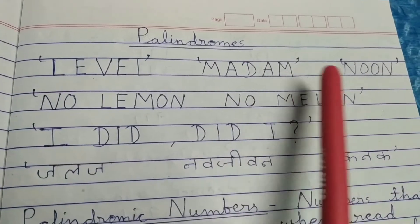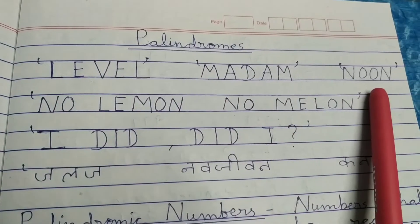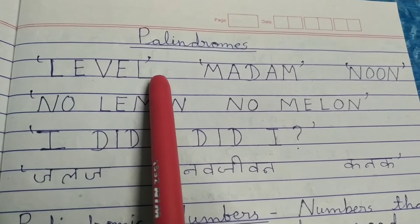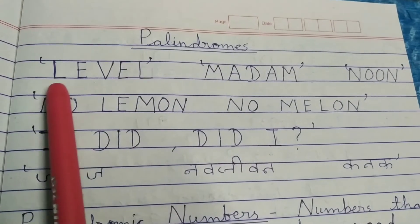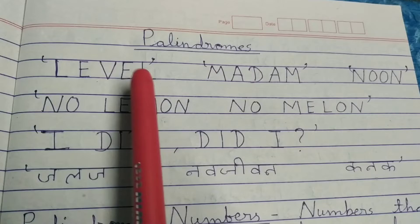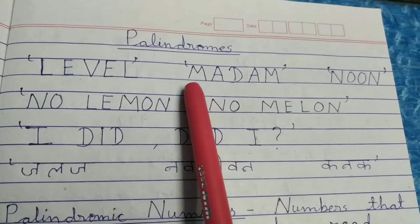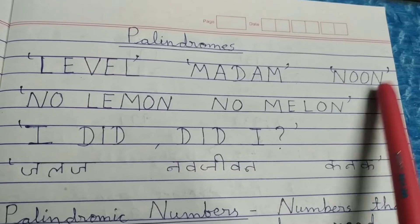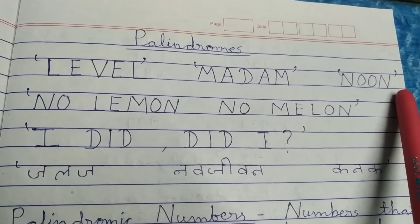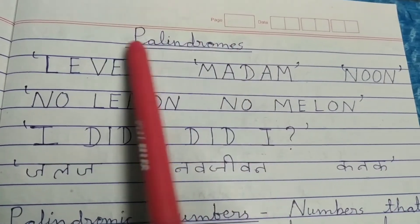Level, madam, noon — is there something special about these words? If you look carefully, these words read the same whether you read from left to right or from right to left. L-E-V-E-L, level; the same is for madam and noon. Such words which read the same in both directions are called palindromic words, or palindromes.